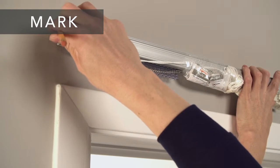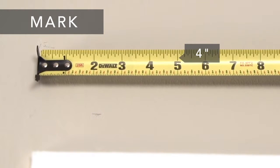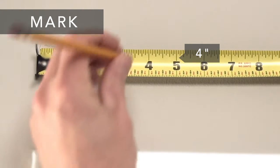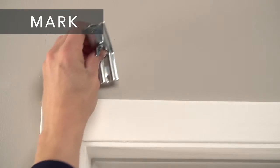Now hold the headrail up to those marks and mark in 4 inches from each side for the headrail bracket locations. Make marks for additional headrail brackets if necessary.